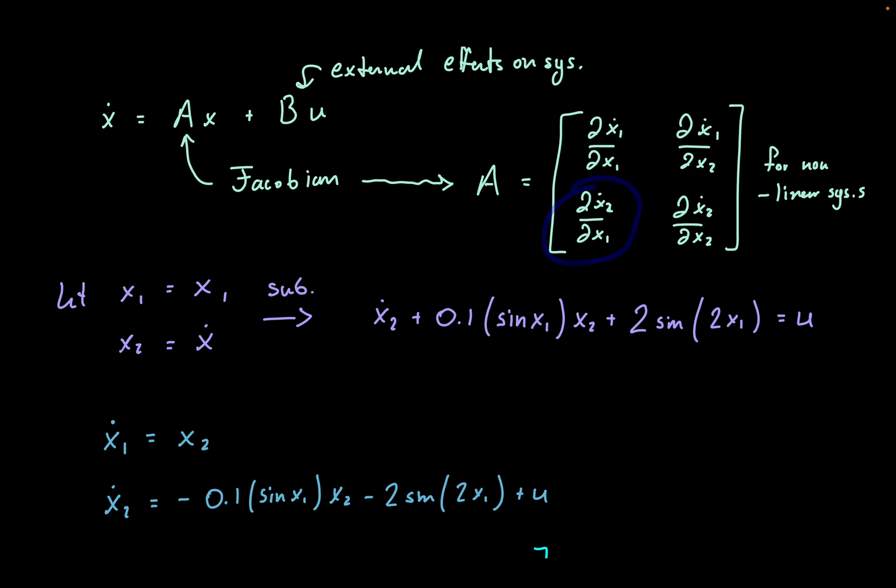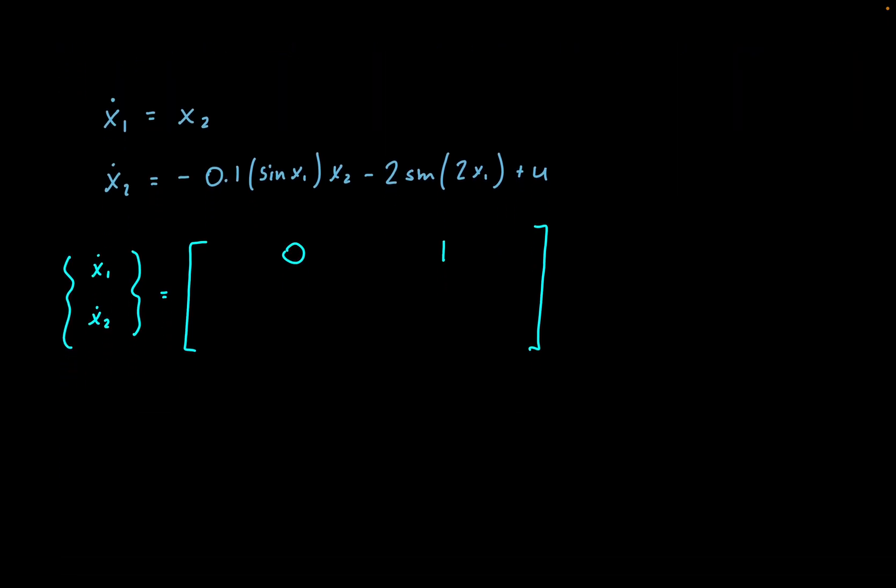Then we're going to do the same exact thing with our second row, essentially going through our second equation, or x2 dot, and we're going to take that with respect to x1 and x2. Taking our partial derivative of x2 dot with respect to x1, we are left with negative 0.1 x2 cosine x1 minus 4 times cosine of 2x1.